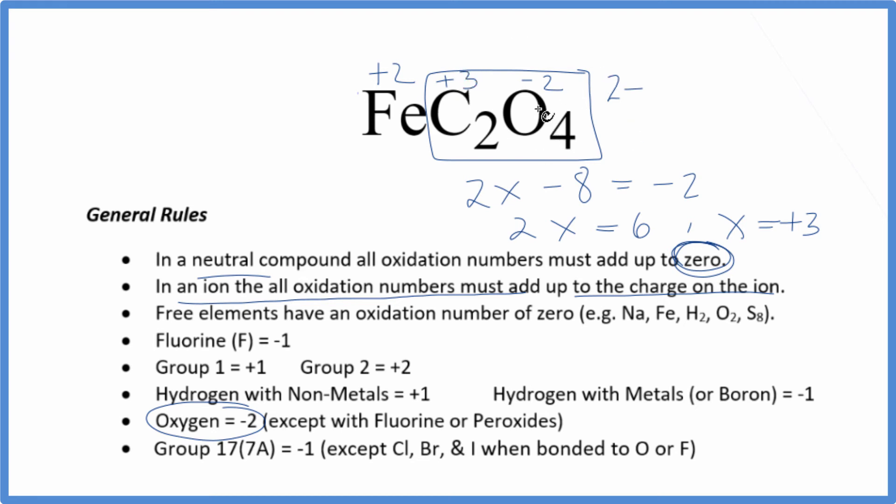So these are the oxidation numbers for each element in FeC2O4. If we add up all the oxidation numbers for each atom together, it'll equal 0 because this overall is a neutral compound.